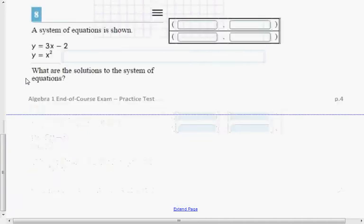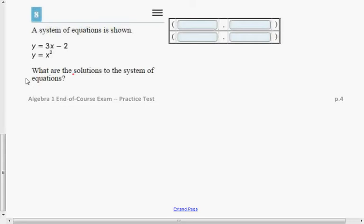Okay, I'm looking at question number 8 now. It says a system of equations is shown: y equals 3x minus 2 and y equals x squared. It asks, what are the solutions to the system of equations?